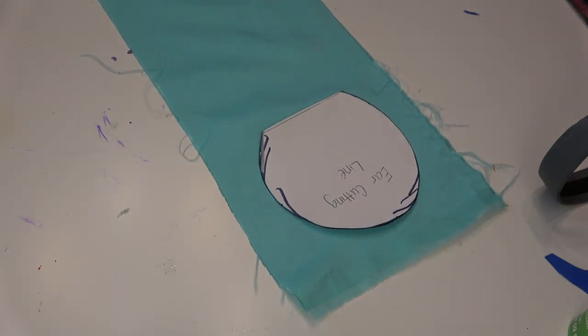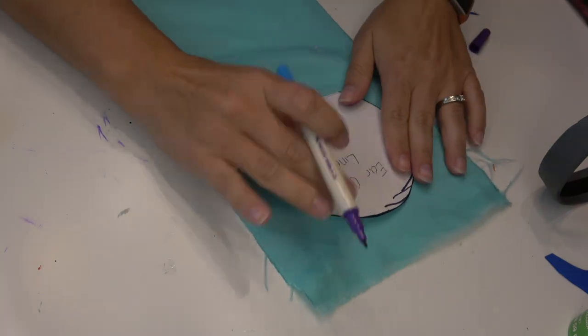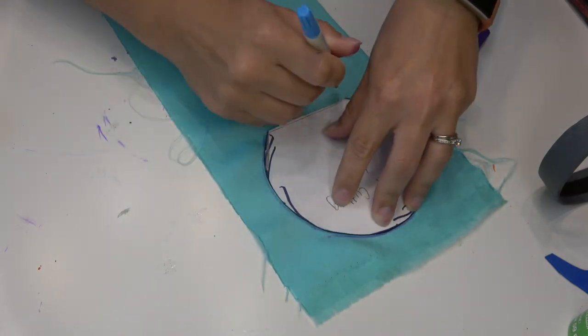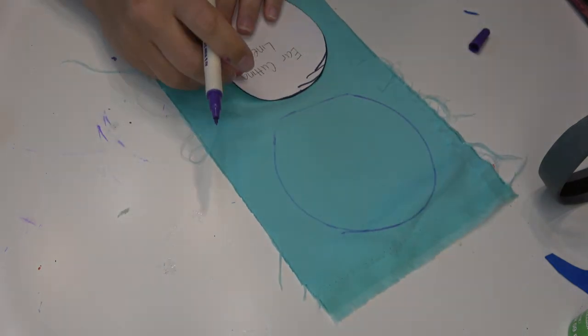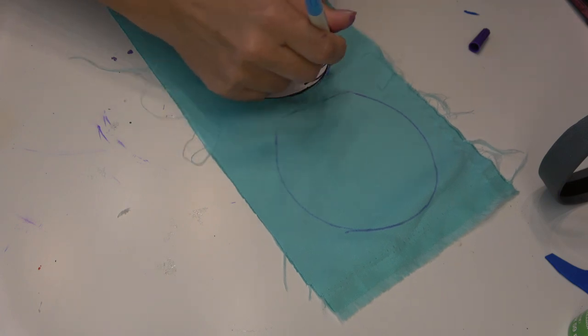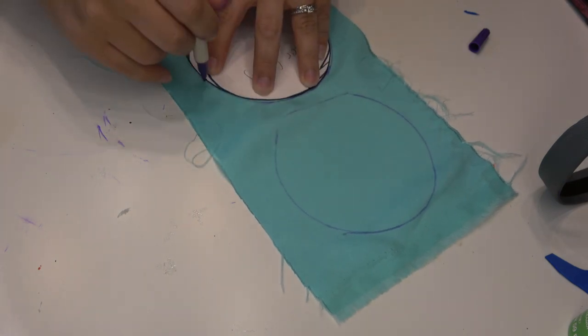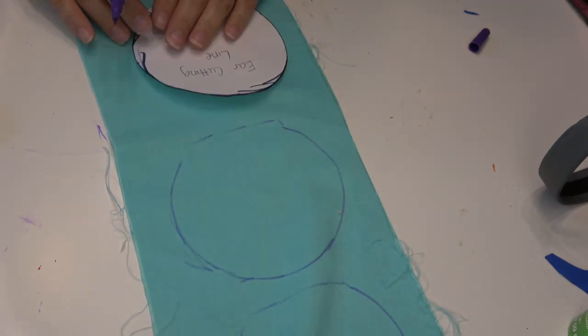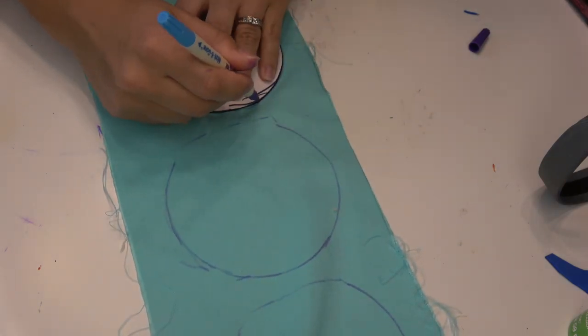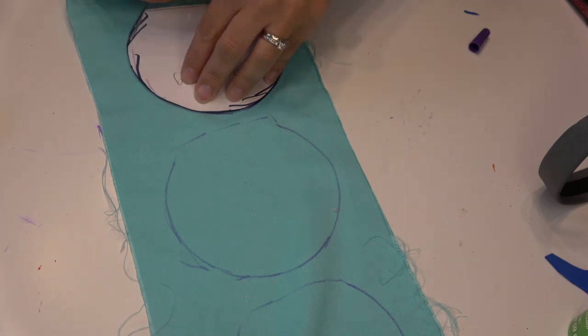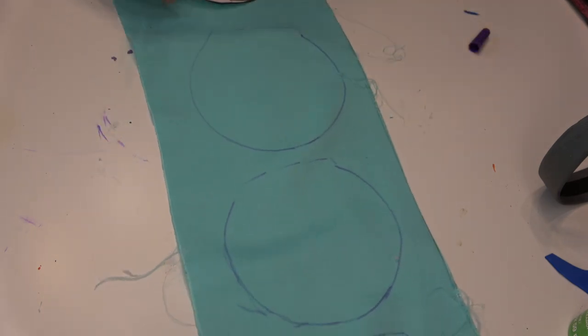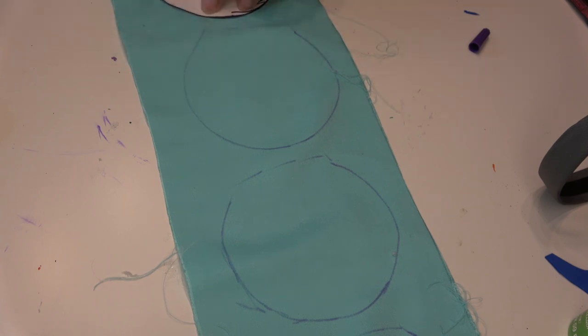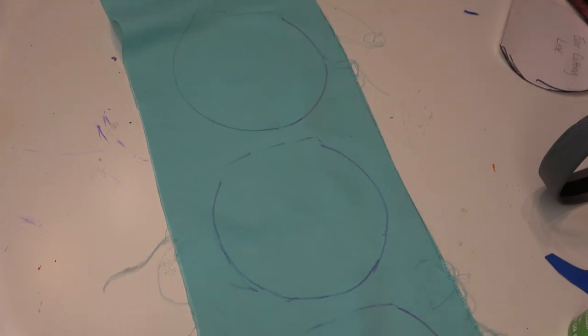Using the largest ear cutting line template, which is linked down in the description box below, I'm going to be tracing four of these onto the back side or the wrong side of the fabric. I am using a disappearing ink marker, however on these silky fabrics I find that the ink does not totally disappear, so just make sure that you're not pressing down so hard that it bleeds through. Either way you should be okay because we're gonna cover it. After tracing four of these, then you'll go ahead and cut those out.